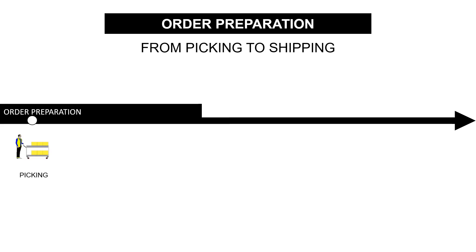You can have issues during order preparation — it starts when the order is received in the WMS and ends when the goods are packed. First, you can have issues during picking: capacity problems during peaks of volume, IT issues, or picking errors. These issues can be transmitted to packing, where you can have a bottleneck because of order quantity, errors, complex packing process, or missing packaging.